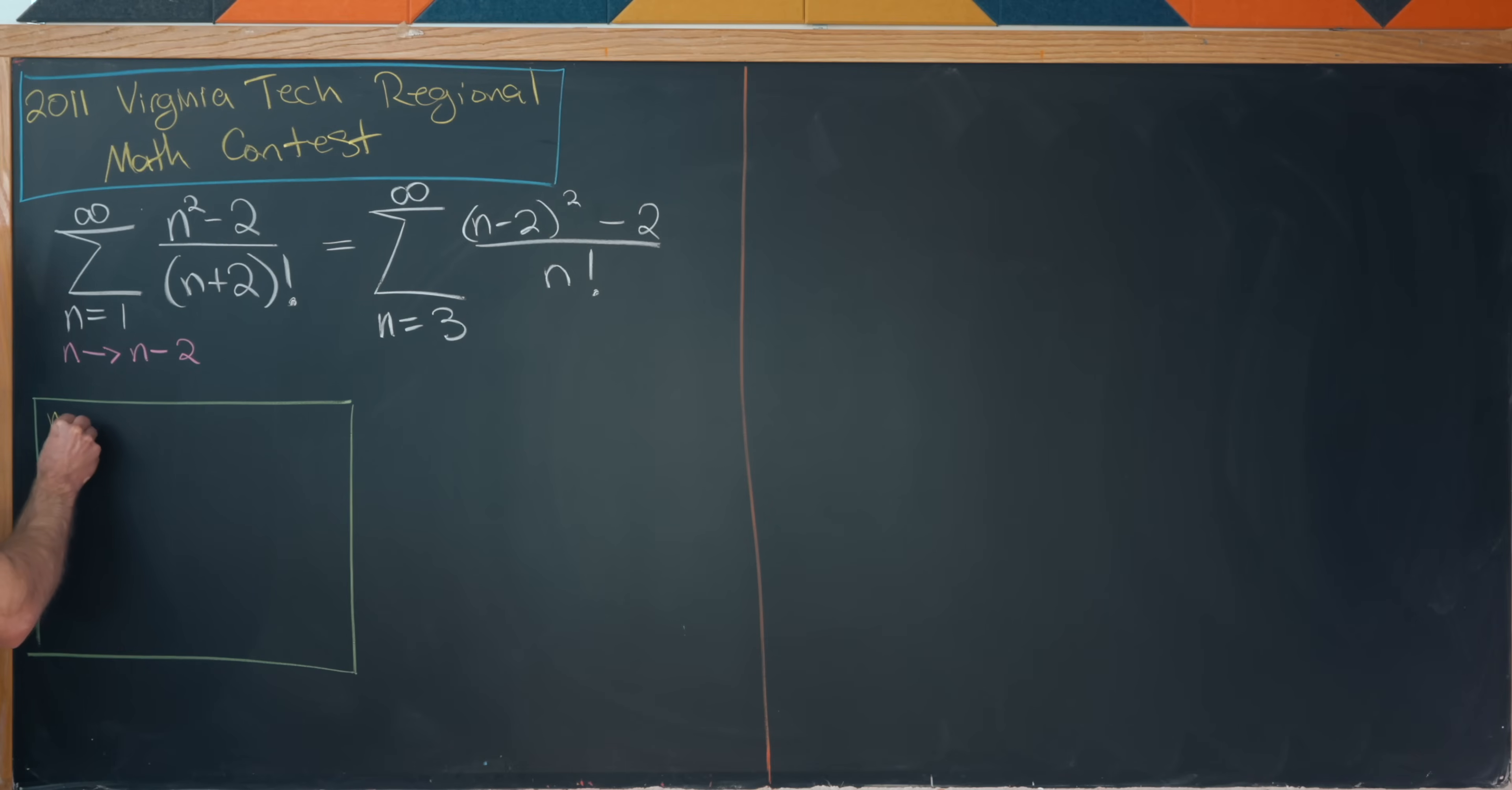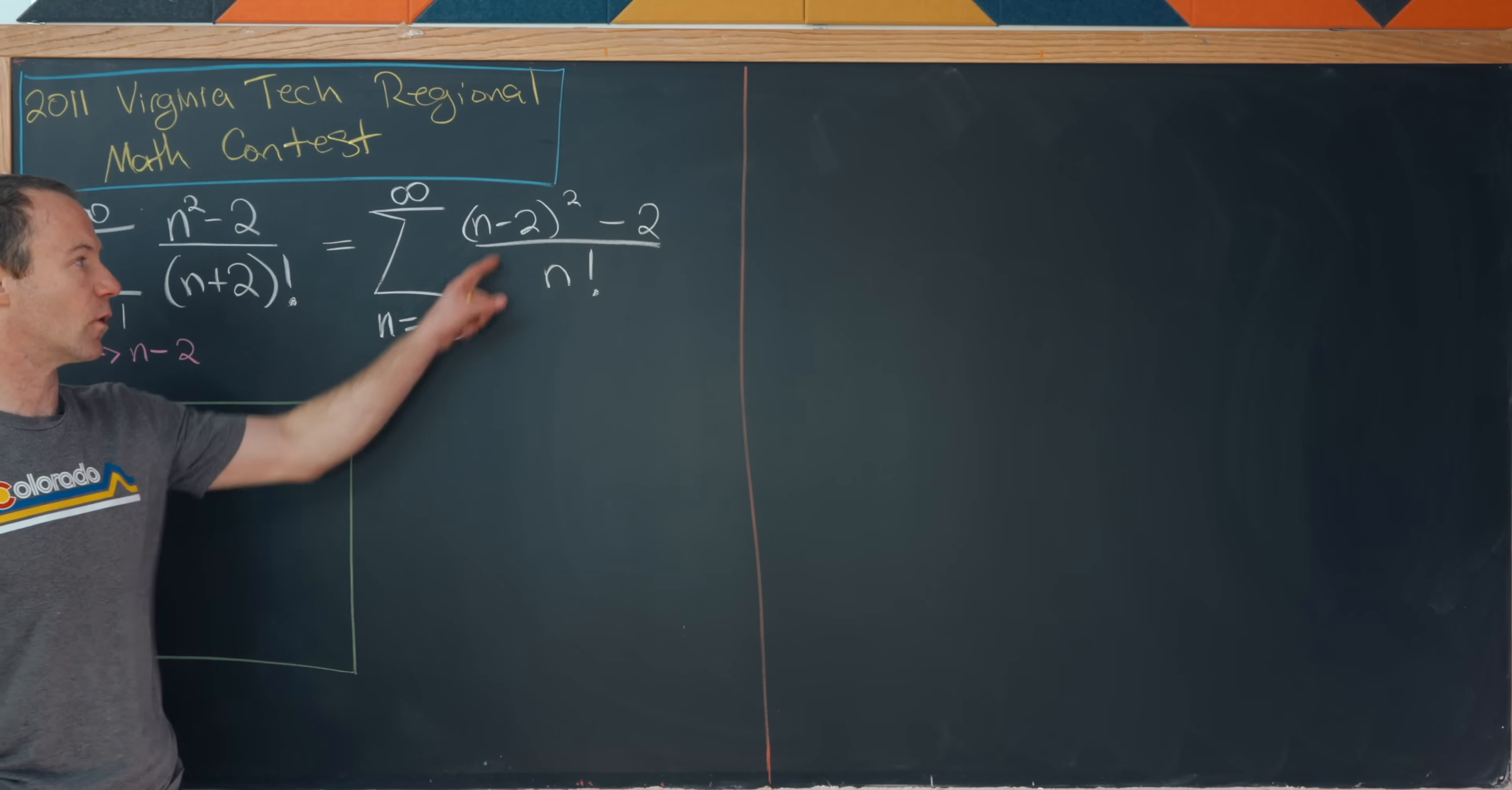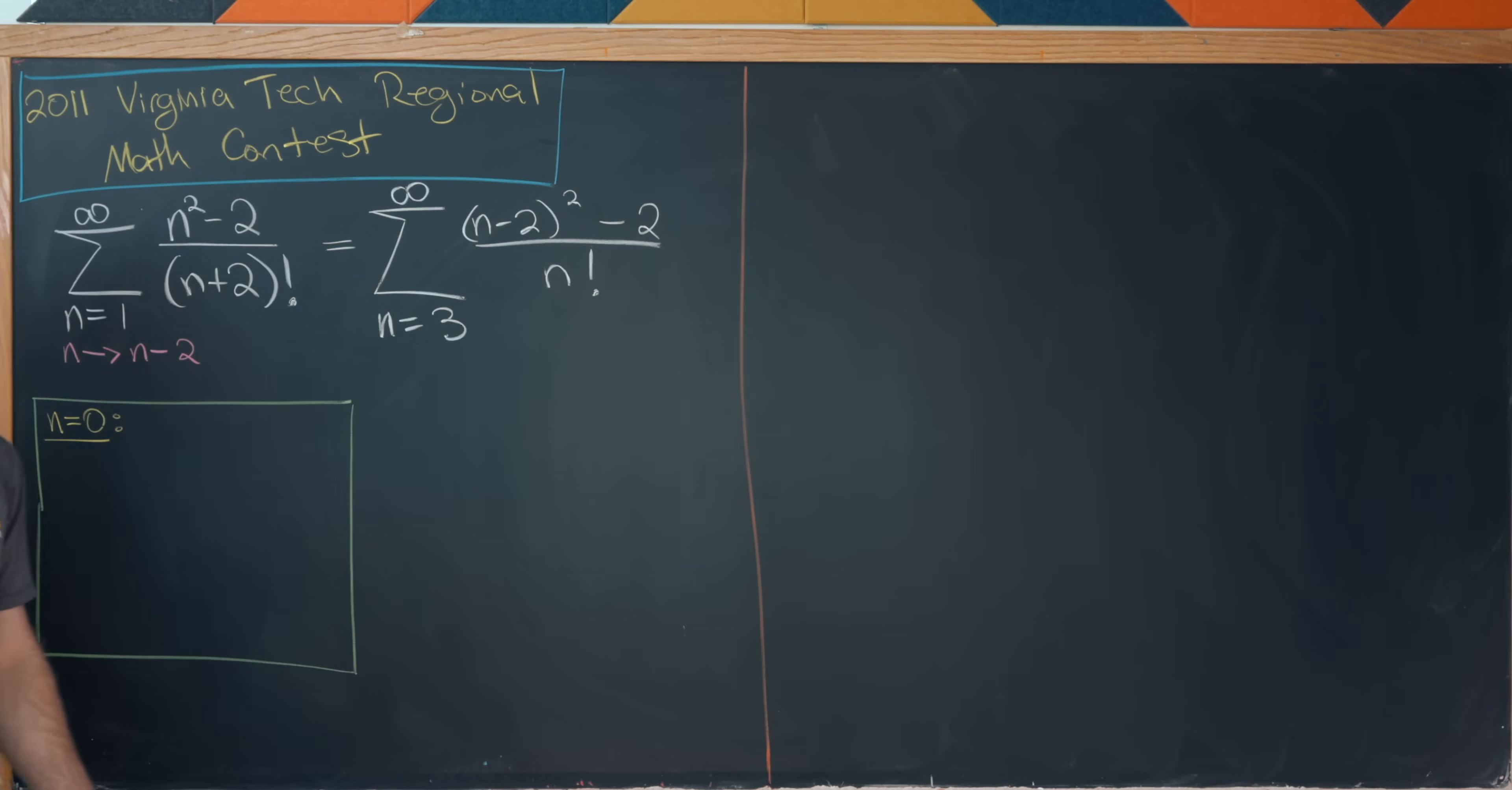So starting with the new n equals zero term. So if we plug n equals zero here, we're going to get two squared, which is four minus two, which is two over zero factorial, which is one. So we'll have two. So the n equals zero term is two.